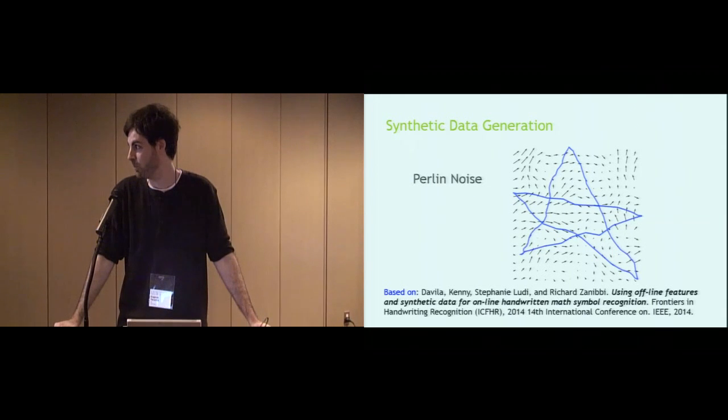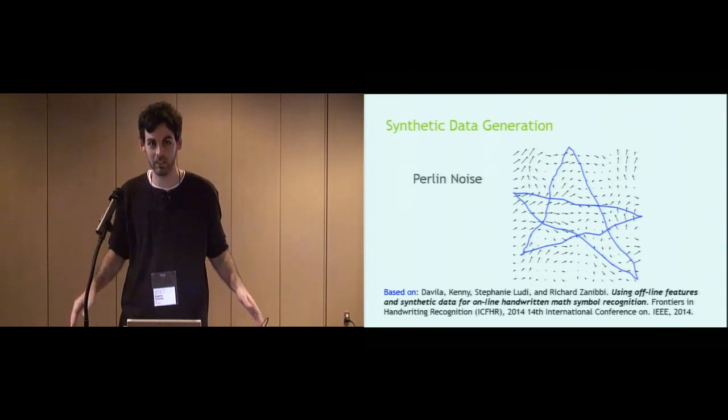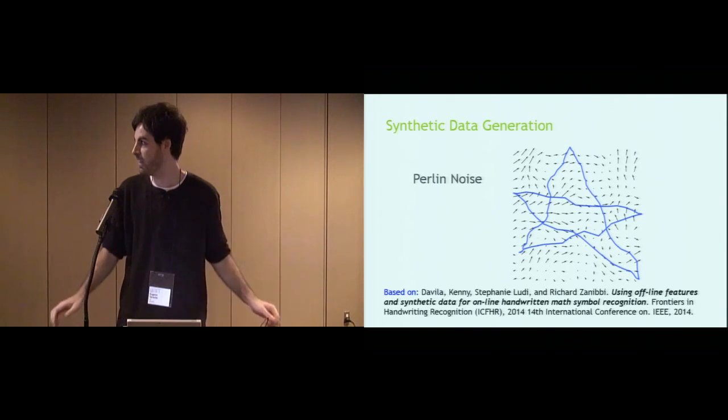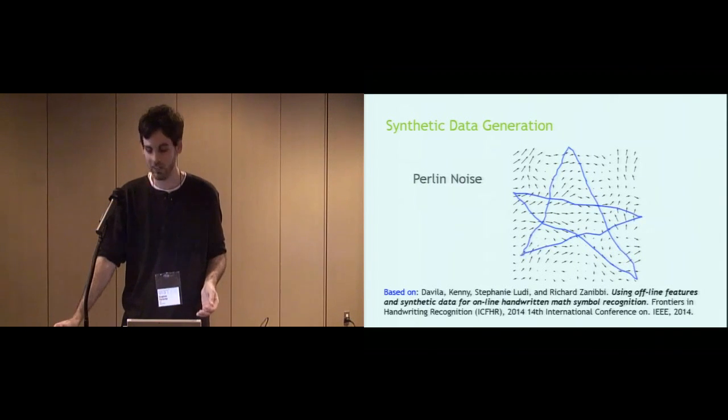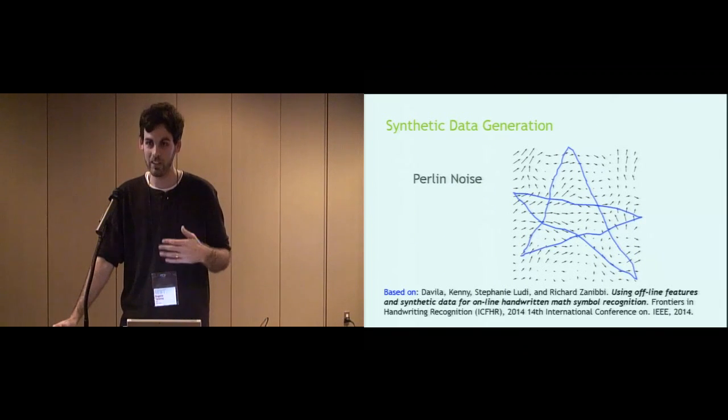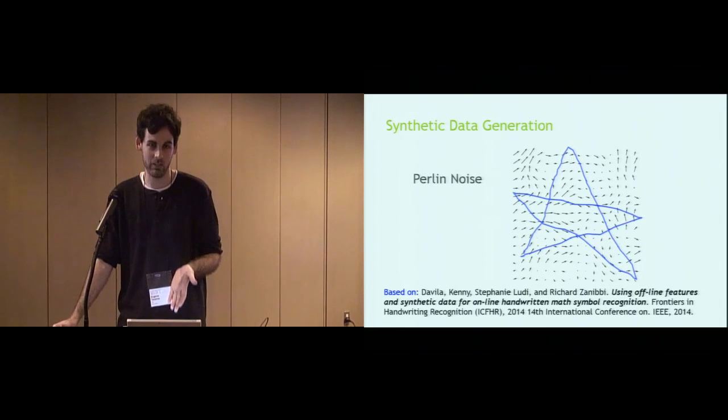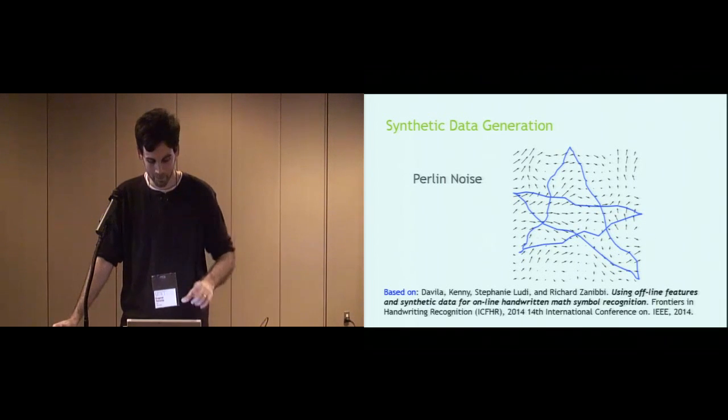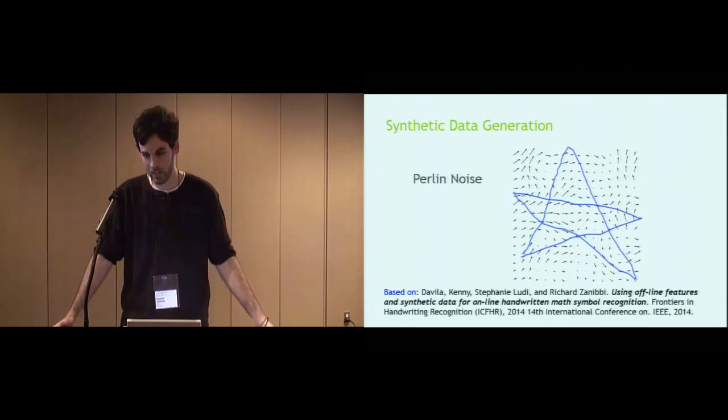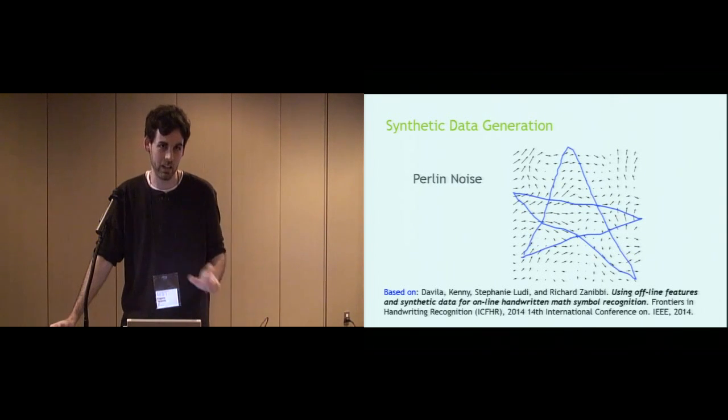A second approach that's common is to use noise models. So this is an example of one approach using Perlin noise, where we create a random vector field, throw the gesture into it, and let it warp according to where it lies. I wouldn't say the samples are very realistic looking, but there's variability there, and it's good for parametric recognizers, for example. This technique was used, for instance, to train a mathematics handwriting recognizer to better recognize symbols.